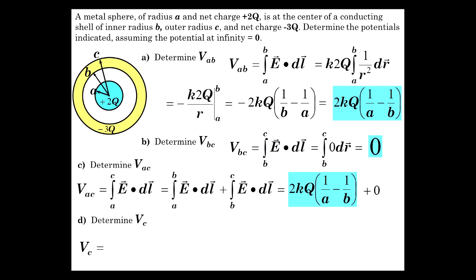And finally, well not finally, let's determine V_c. What's V_c? The potential here is simply the integral of the field from that location out to our reference point at infinity. So that's Q enclosed over epsilon zero times dr from c to infinity.